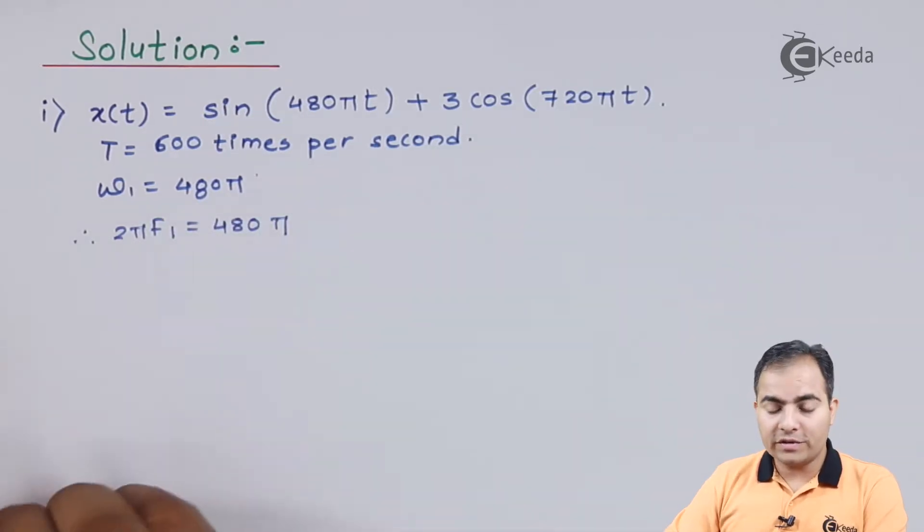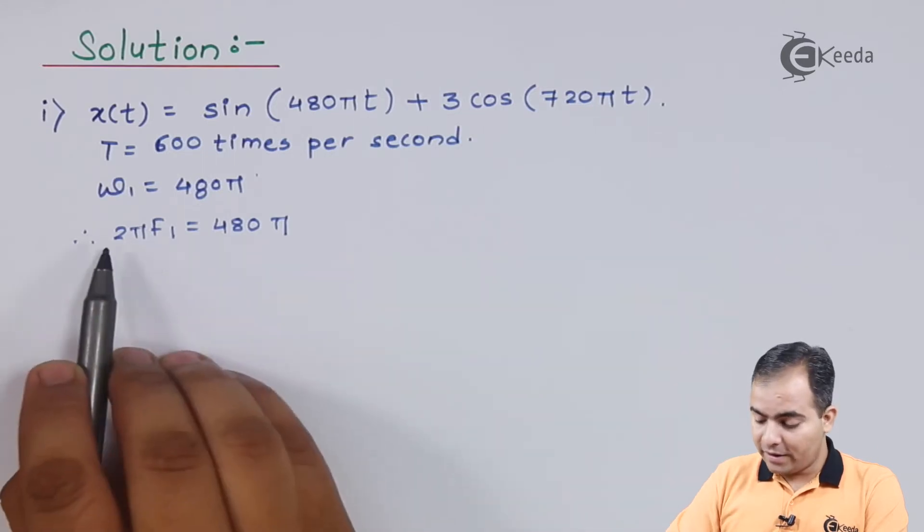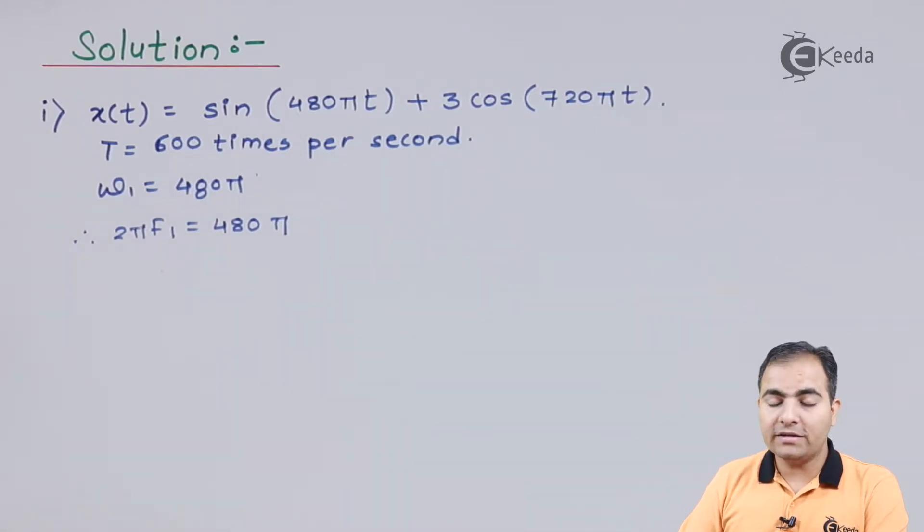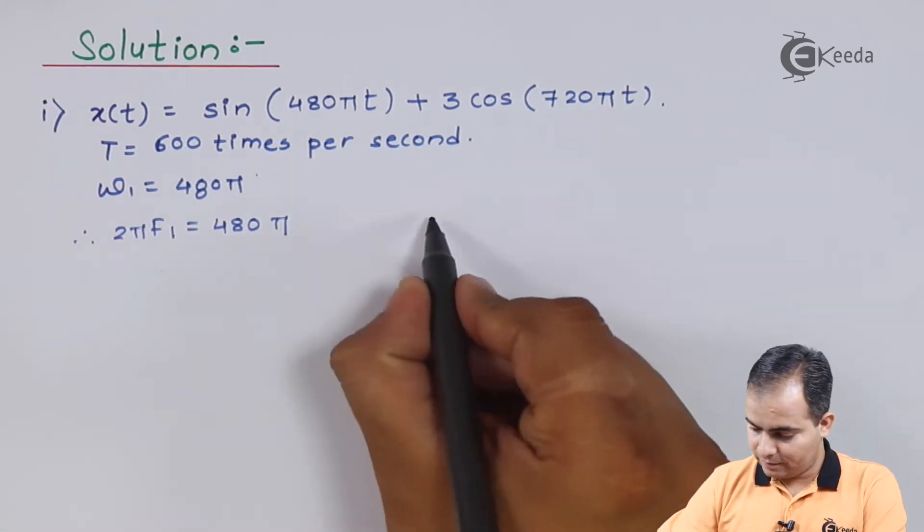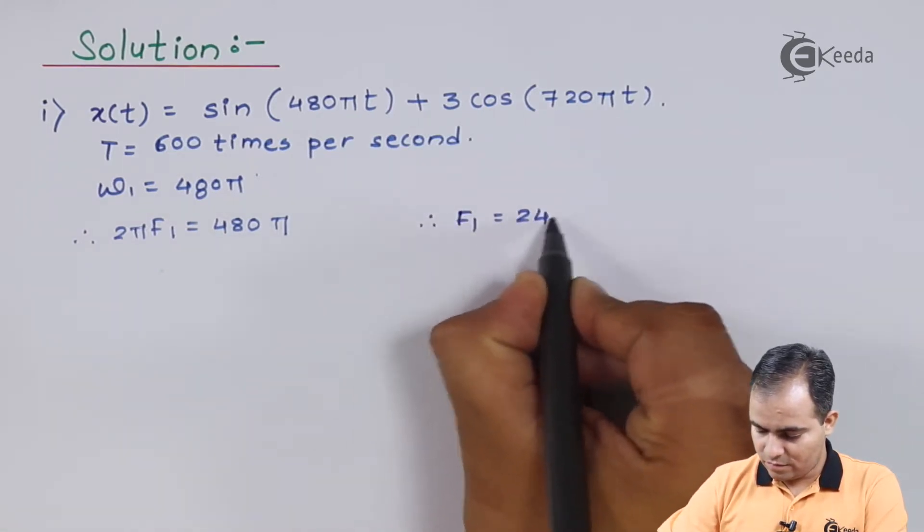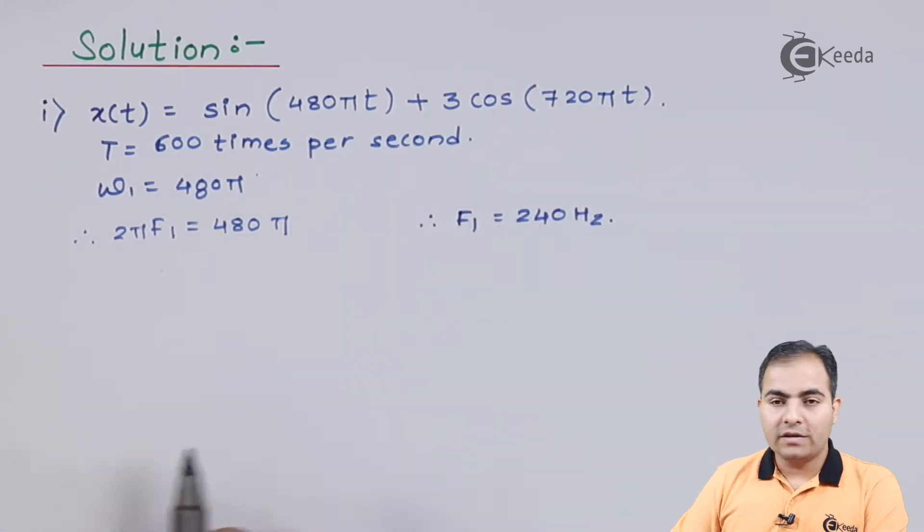Now look at both sides. We can cancel this π. If I divide 480 by 2, what you will get? Answer is 240. This is my f1.